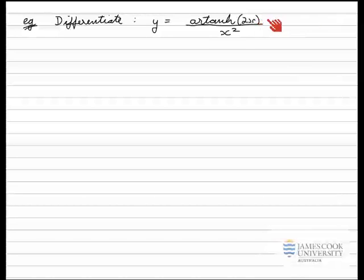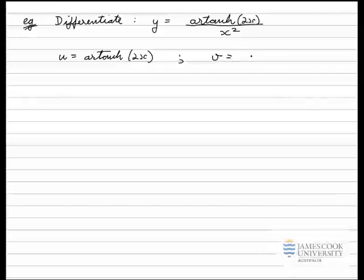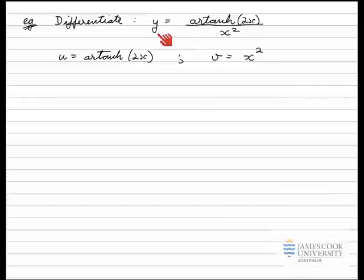Let's start and set up the quotient rule. First of all, I'll let u equal the numerator, which is artanh(2x), and I'll let v equal the bottom line, or the denominator, which is x squared. I need the derivative of each of these to put together in the quotient rule to find dy/dx.